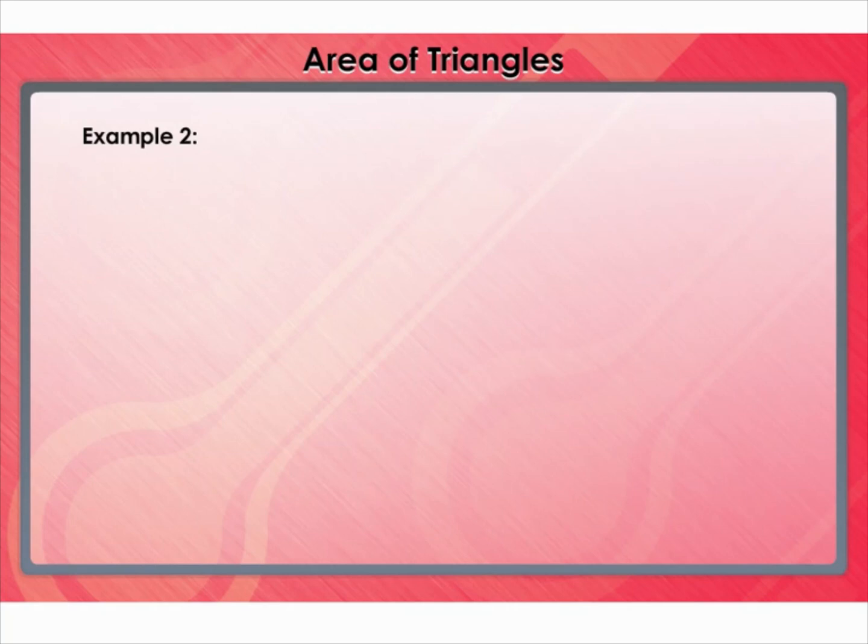Let's move to another example. Find the area of a triangle whose vertices are (2, -2), (-5, 7), and (-4, -6).